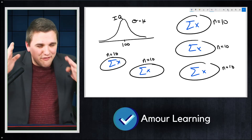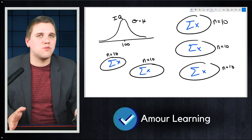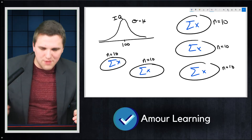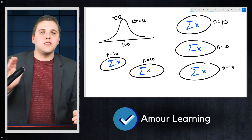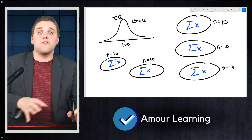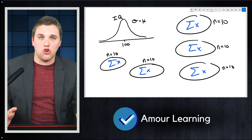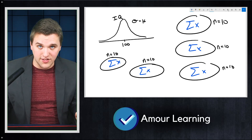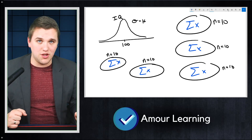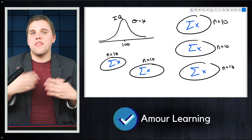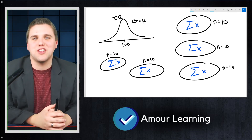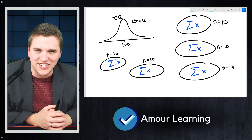So it's very similar to the central limit theorem, but the idea is that instead of the averages being normally distributed, it's the sums of the values that are normally distributed. That's what the central limit theorem for sums is. Thank you so much, and I'll see you in the next lecture.